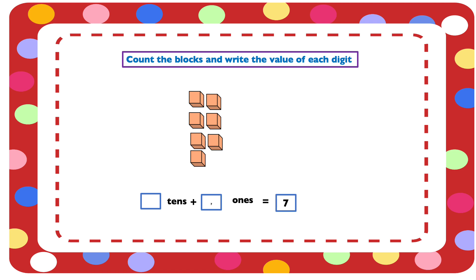7 ones because it's not up to 1 group. So we have 0 tens and 7 ones. The value of 7 is 7 ones.